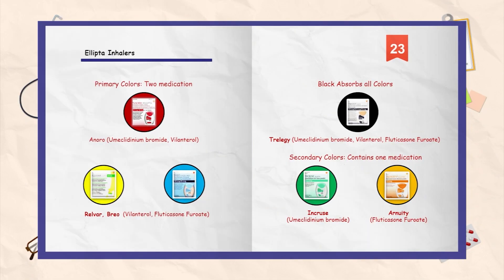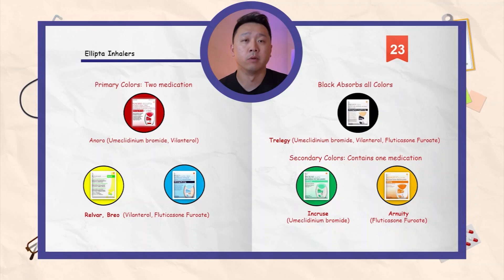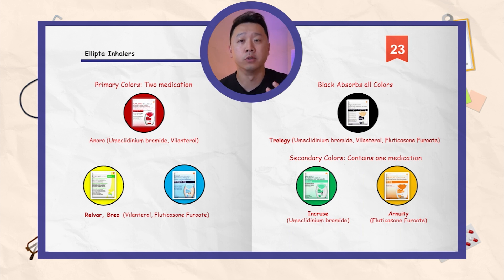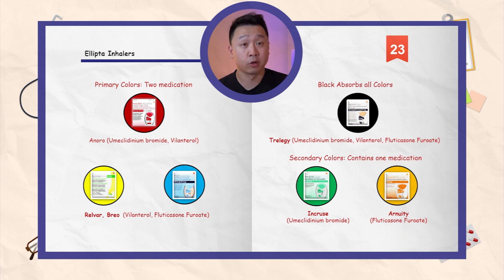Bonus clip. As one of the many ways to remember the Ellipta inhalers in asthma and COPD, I've created an acronym using different colors — primary and secondary colors — to remember the Ellipta a little bit easier. In the primary colors, which consist of red, yellow, and blue, there are two medications incorporated because they are of greater importance.